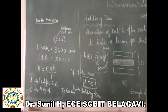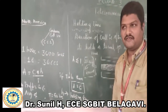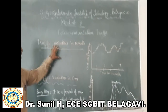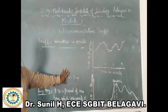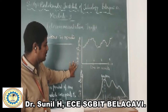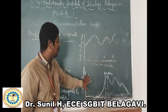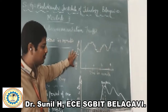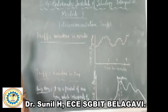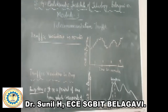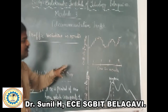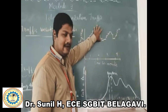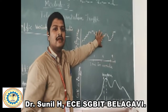Now we will move towards traffic variations in minutes and traffic variations in a day. When considering traffic variations in minutes, the number of calls varies in a random manner as individual calls begin and end. You can see the figure where the number of calls are occupied randomly. Here we have considered only four minutes, so this is called short-term variation in terms of minutes.